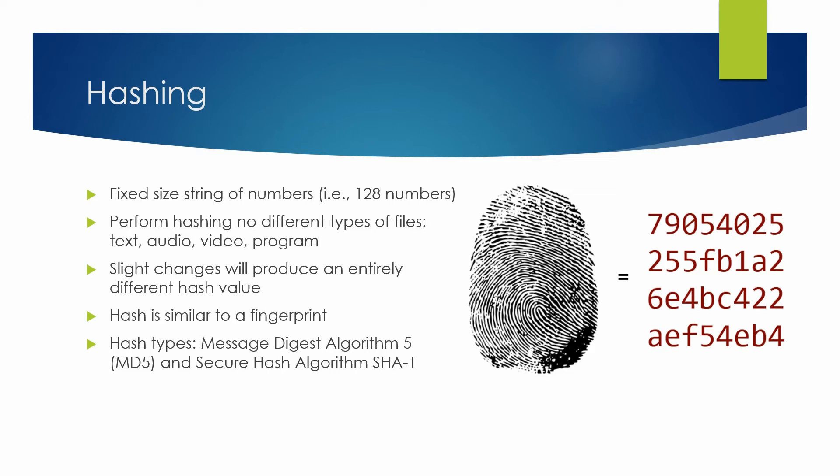For example, let's say you had a text file with the word 'password' in it. If you ran it through a hashing function, for example, MD5, also known as Message Digest Algorithm 5, it would produce a specific hash value. If you changed the text file so that it had the word 'passwords' with an S at the end, it would produce an entirely different hash.